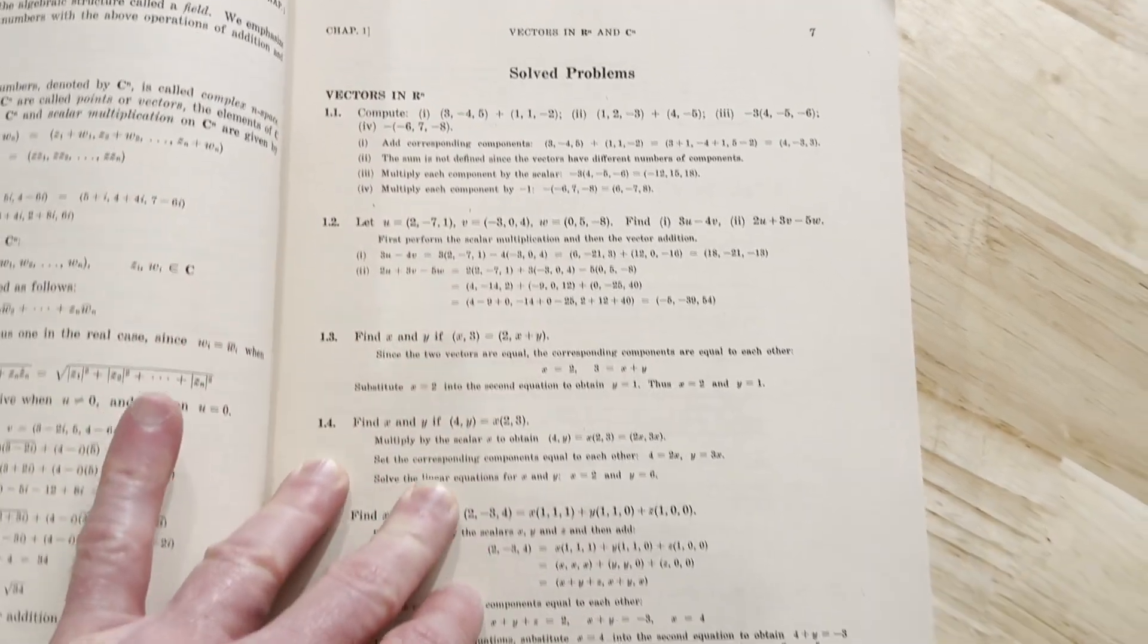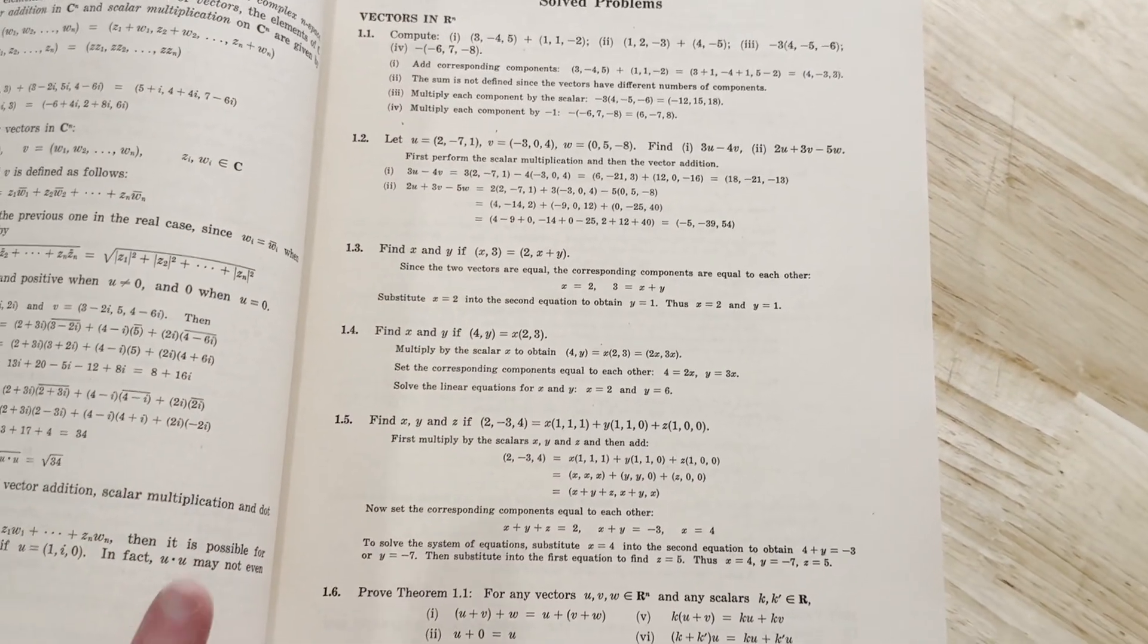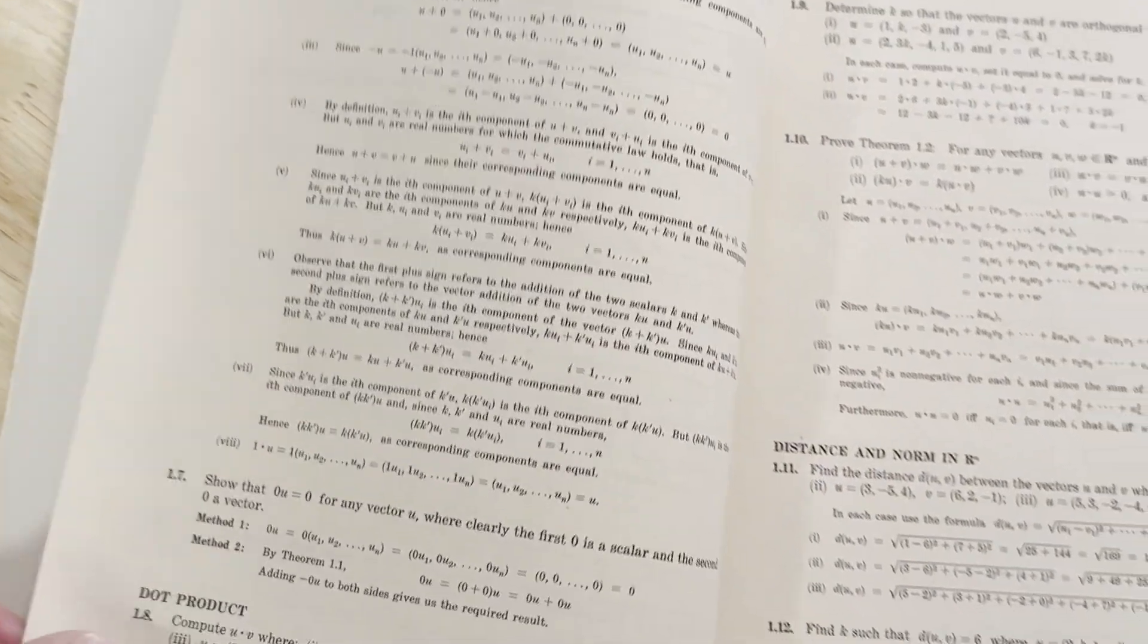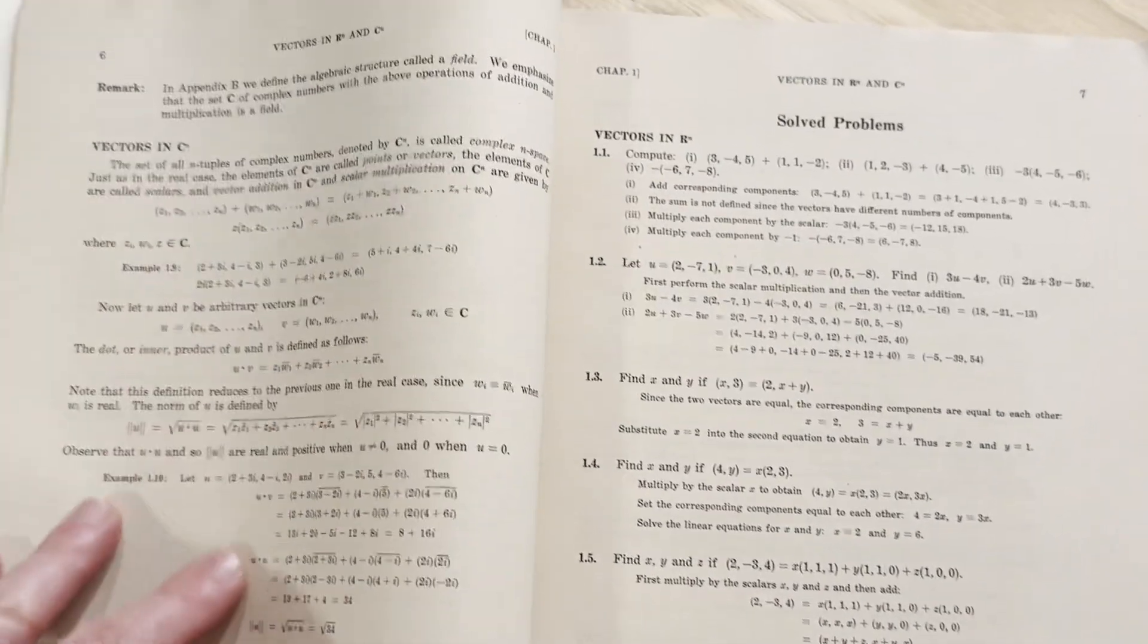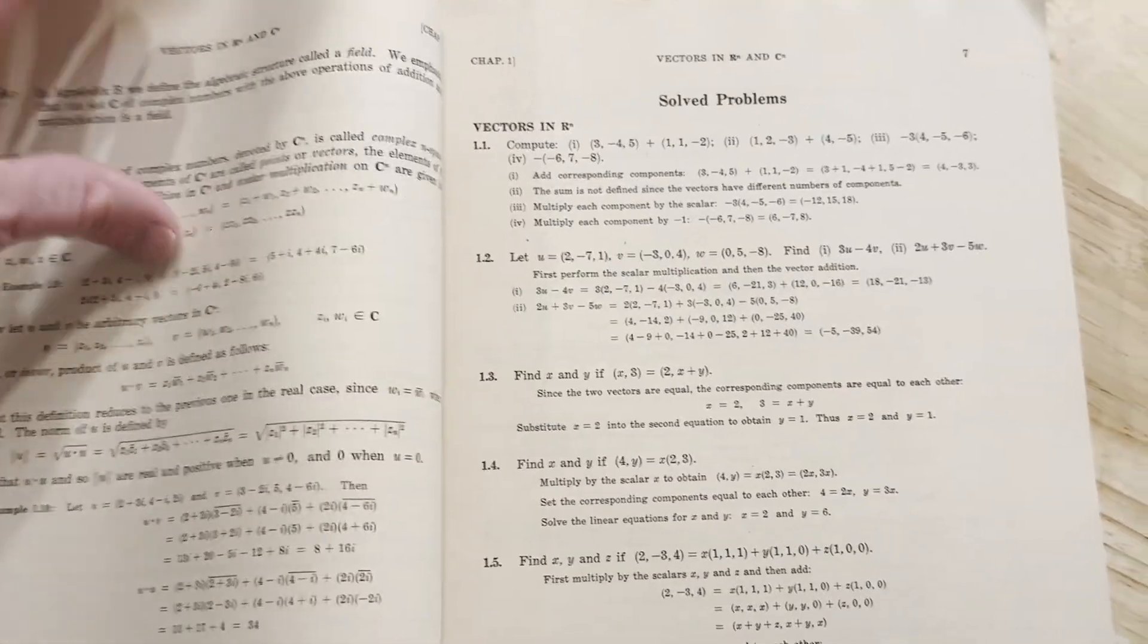So you have actual solved problems that are worked out in detail. Very nice. And then more here. And then it's broken up by subsection. You see vectors in Rn. So you can go back and reference that particular section if you're working on these. Let me just show you.